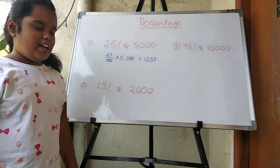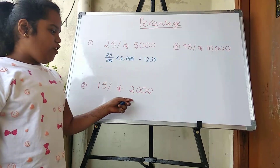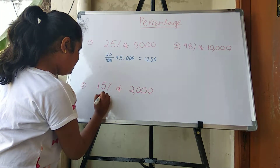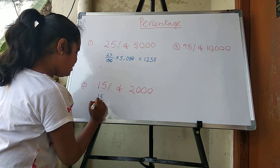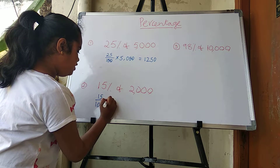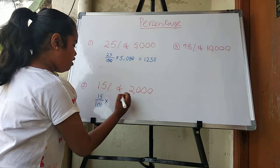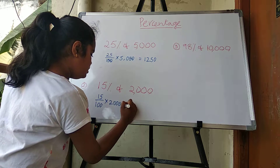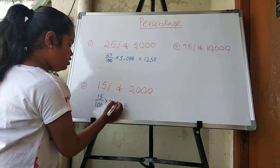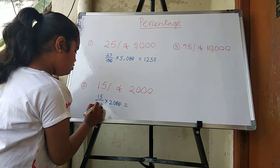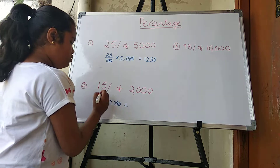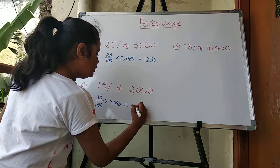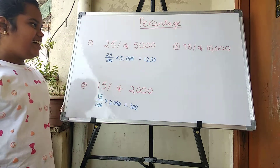The second example is 15% of 2,000. So first we should write 15 by 100 into 2,000. Strike out two zeros here and two zeros here. 15 twos are 30, and 1,000. The answer is 300.